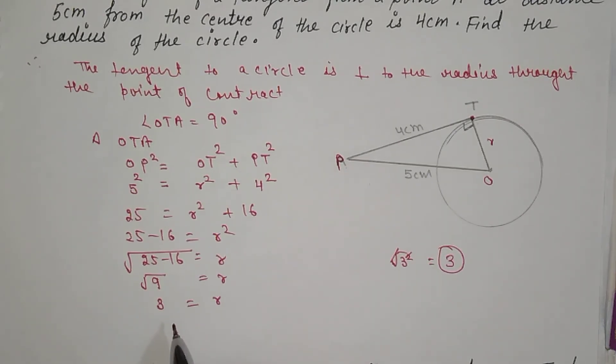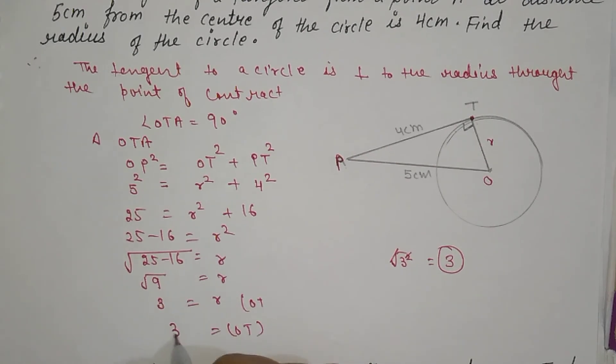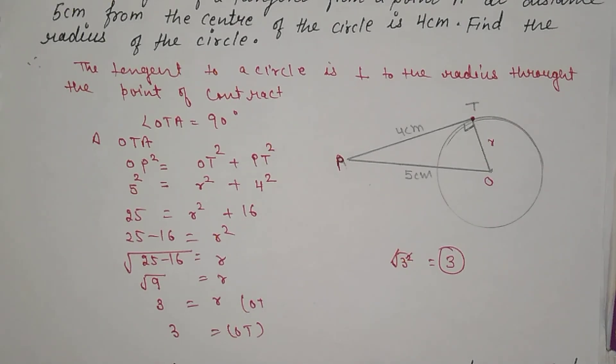So the radius came out to be? 3. Which we call OT. So OT is equal to 3. This is what you had to find out. So our question is complete. It was a small question.